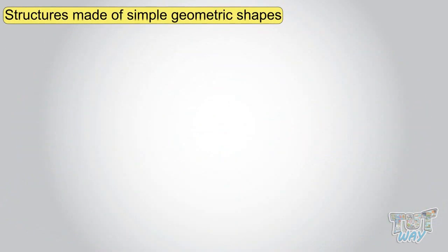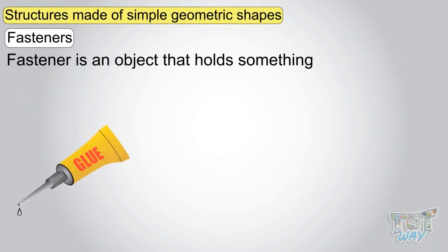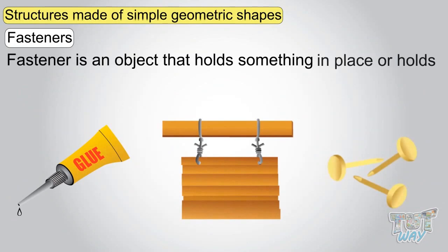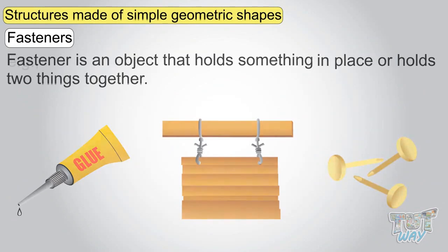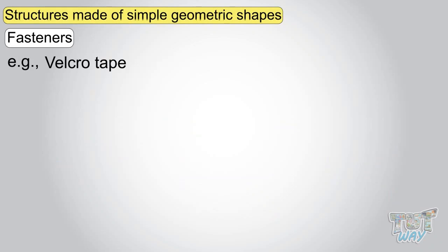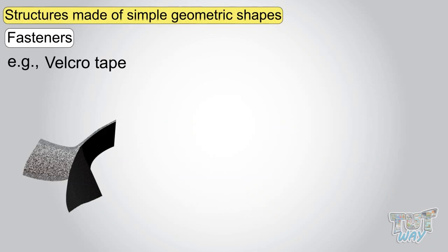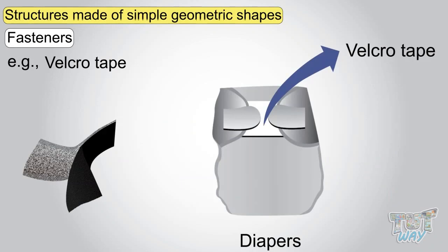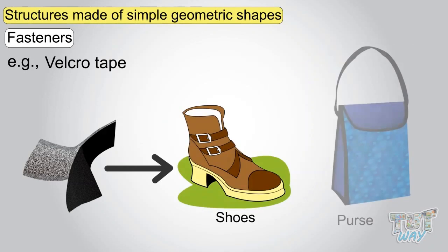Many structures are made of simple geometric shapes, like fasteners. A fastener is an object that holds something in place or holds two things together. For example, Velcro tape — Velcro tape is used in cloth diapers and many other things like shoes and purses.